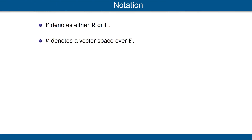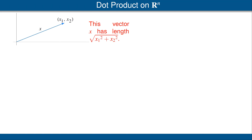Let's quickly recall our standard notation. F denotes either the scalar field R of real numbers or the scalar field C of complex numbers. We also let V denote a vector space over F. To motivate the definition of the inner product, we'll start by looking at the dot product on Rn.